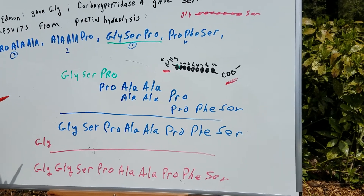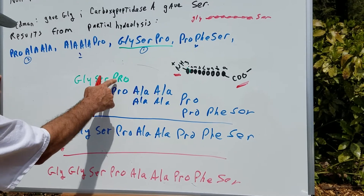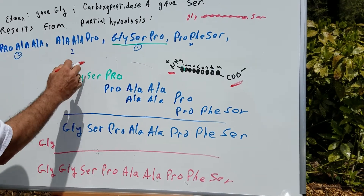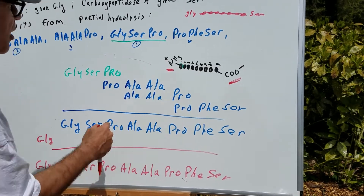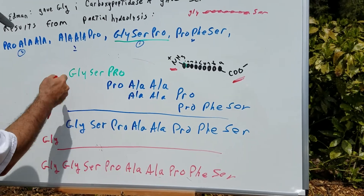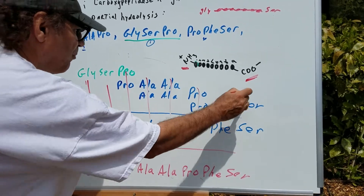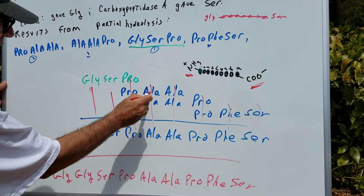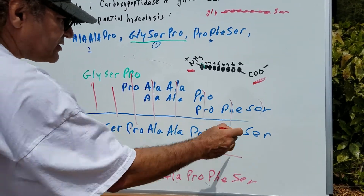Underneath, you want to do what I call matching sequences. Number two is Pro-Ala-Ala — notice I lined up the word Pro. So Pro-Ala-Ala. Then I look for another sequence, Ala-Ala-Pro, and that matches here: Ala-Ala-Pro. And then finally, Pro-Phe-Ser. So combining everything we get: Gly, Ser, Pro, Ala, Ala, Pro, Phe, Ser — counting once through each overlap.